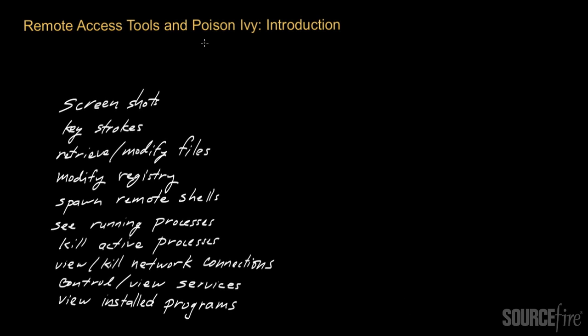The Poison Ivy remote access toolkit has been around since about 2005 and has been used in a number of prominent attacks. For example, the Nitro gang actually used this particular toolkit. I did some videos on the activities of the Nitro gang, specifically their exploitation of vulnerabilities affecting both Java and Internet Explorer.